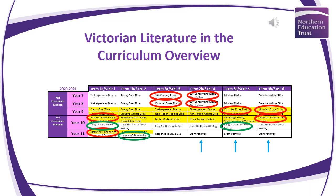Looking at our curriculum overview, we can see how Victorian literature is embedded right across from Year 7 to Year 11. Initially in Term 2a we have 19th century fiction — our NET poetry anthology and introduction to Gothic literature. Moving into Term 2b, we look at travel writing, comparing modern day non-fiction to 19th century non-fiction. Then moving into Year 8, we look at Oliver Twist, which moves seamlessly into 19th century and modern non-fiction through the Speeches Through Ages.